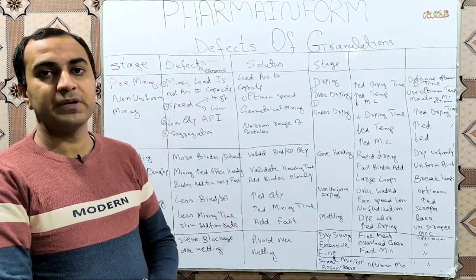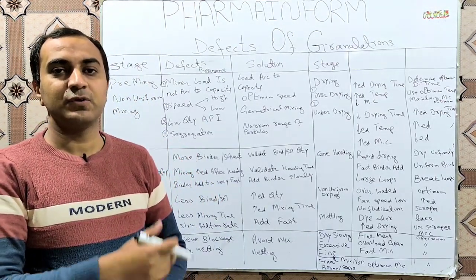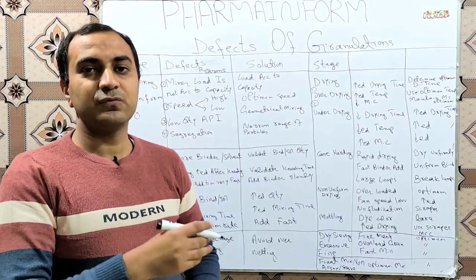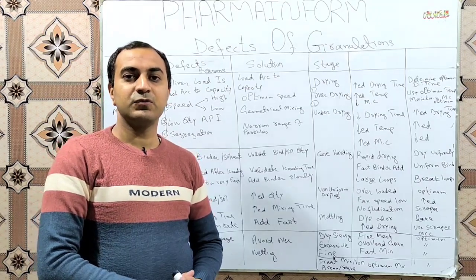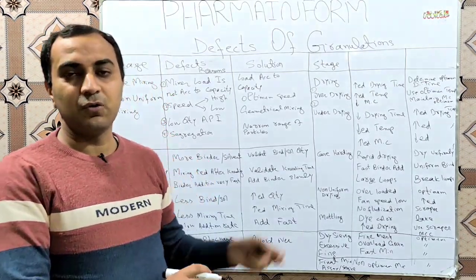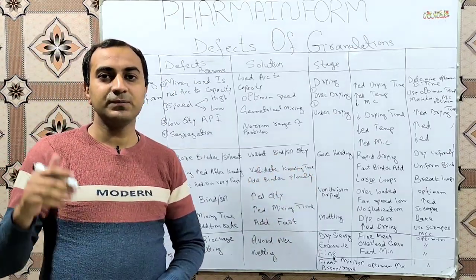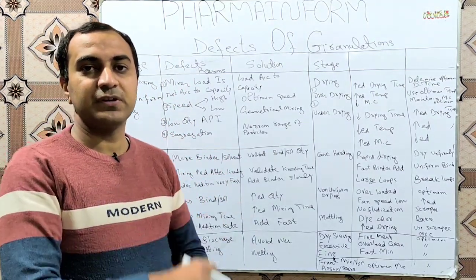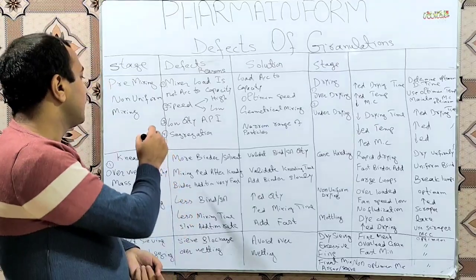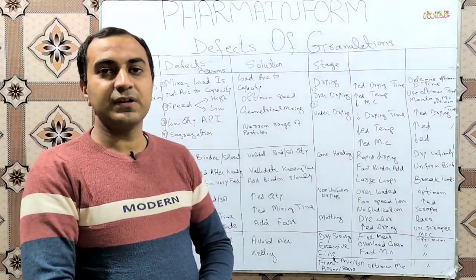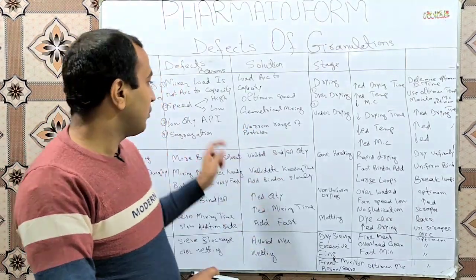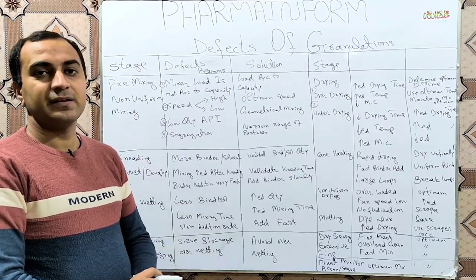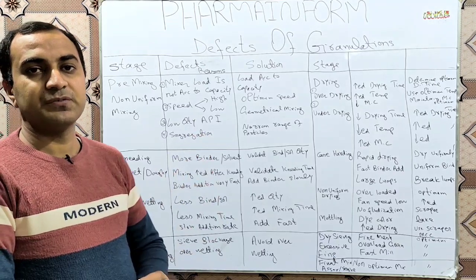The next reason may be a low quantity of API. If we are using a very low quantity of API, we may face a non-uniform mixing problem during the premixing stage. The solution for low-quantity API is geometrical mixing — a specific ratio-wise mixing of API with excipients, which we will discuss in the next video. Additionally, segregation occurring in the premixing stage can cause non-uniform mixing; to avoid this, a narrow particle size range of excipients or API should be used.